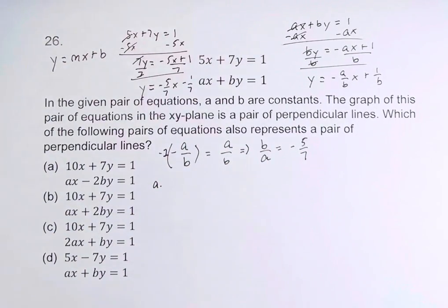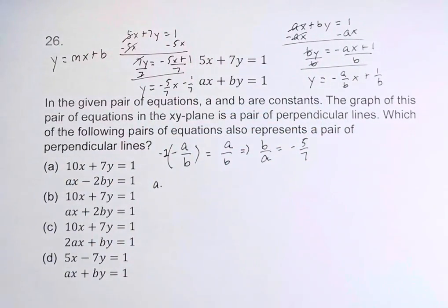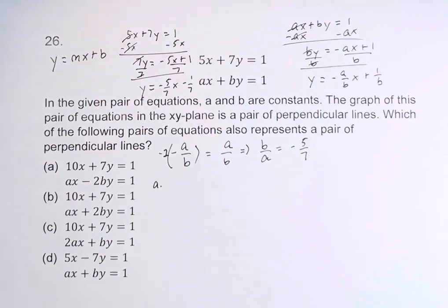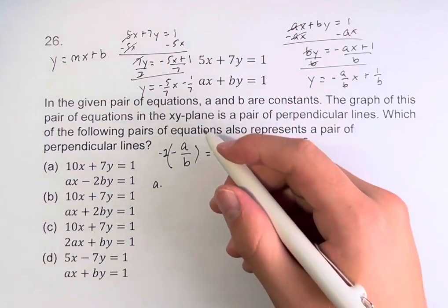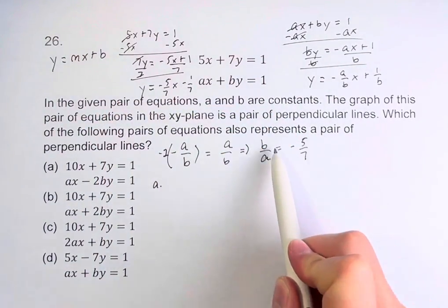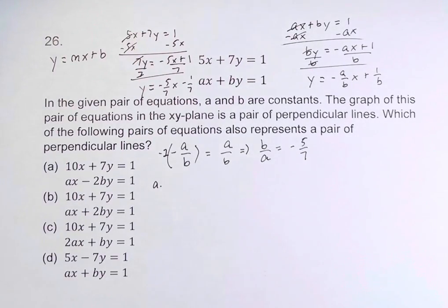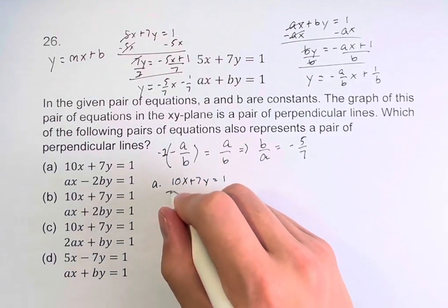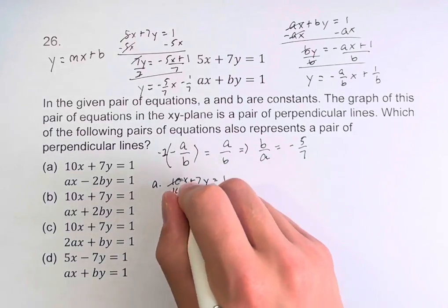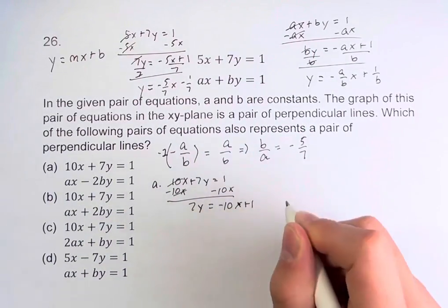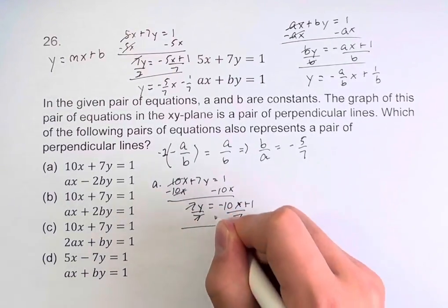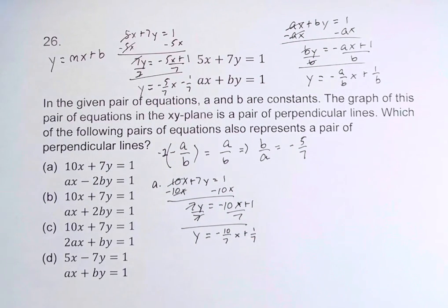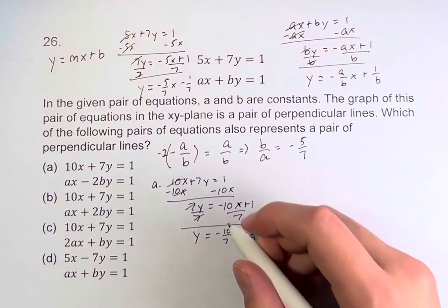Let's start with option A. In all of these, we have an equation with normal coefficients and one with coefficients involving a and b. We find the slope of each line and compare them using what we've already learned. For option A, 10x plus 7y equals 1 — converting to slope-intercept form — gives y equals negative 10 over 7, x plus 1 over 7. So the slope of this line is negative 10 over 7.